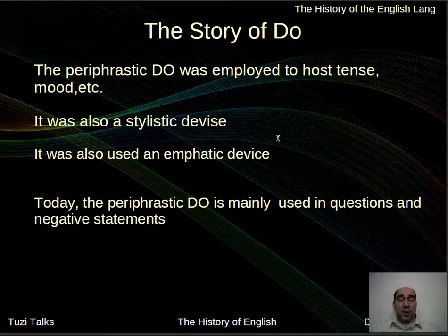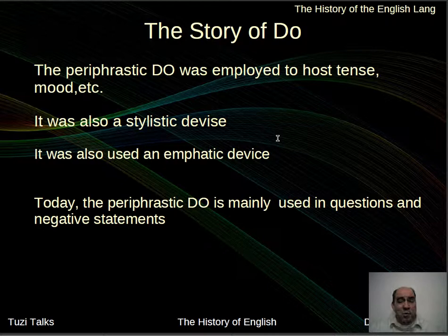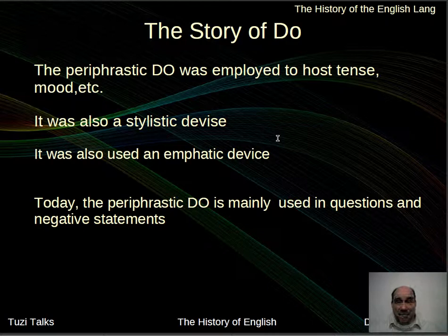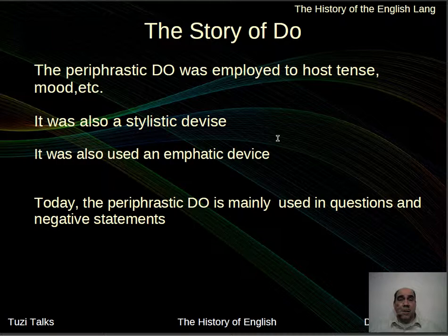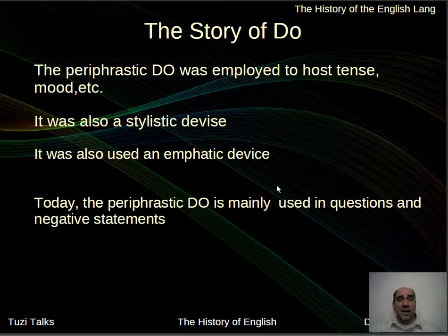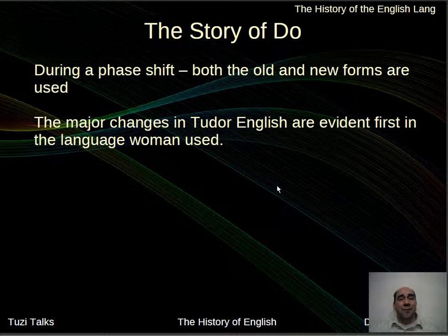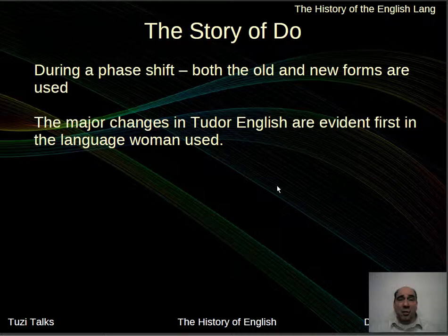The paraphrastic do was also used to host tense and mood — a stylistic and emphatic device: 'I do not want to go.' Today, the paraphrastic do is mainly used in questions and negative statements. We use do to hold grammatical meaning, hold the negative, or front the first part of the verb: 'Do you want to go?' During the phase shift, both forms were used interchangeably — 'I go not' and 'I do not go' — though today we predominantly say 'I do not know what you mean.'